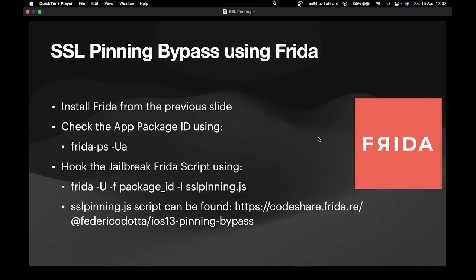SSL pinning bypass can happen using various methods. In this entire course we are going to use three methods. The first method is SSL pinning bypass using Frida. You can install Frida using the previous slides. All you have to do is check the app package ID using frida-ps -Ua, and then hook the Frida SSL pinning script, which can be found at a particular link. I have compiled all the Frida scripts into one and shared them in my GitHub repo.